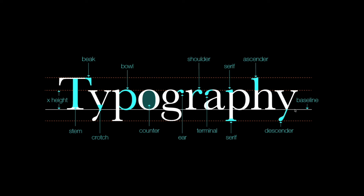Now let's talk about ascenders and descenders. We have the x-height, and above this you'll find ascenders in letters such as h, and descenders in letters such as y. Letters with downward strokes that extend past the baseline have descender strokes, and alternatively if a stroke moves upward and away from the main body of the letter, we call that the ascender stroke.